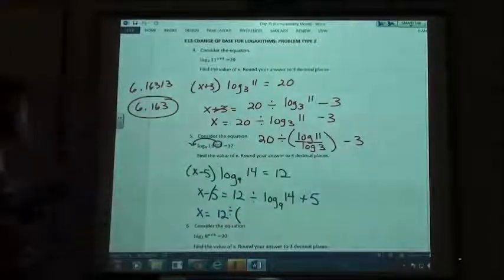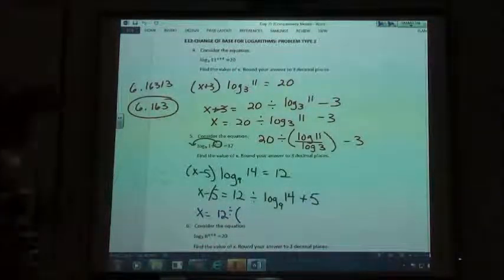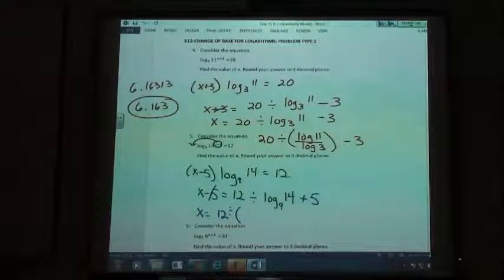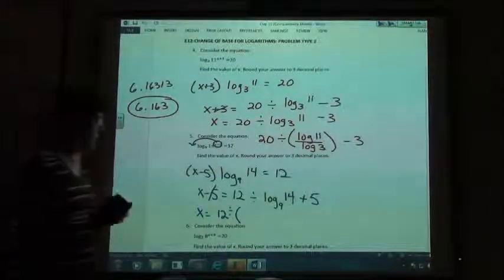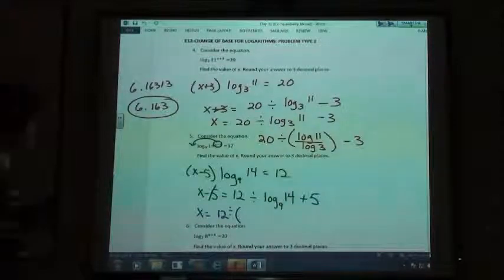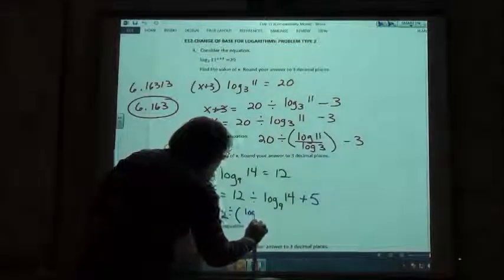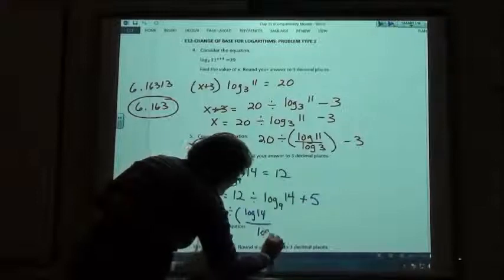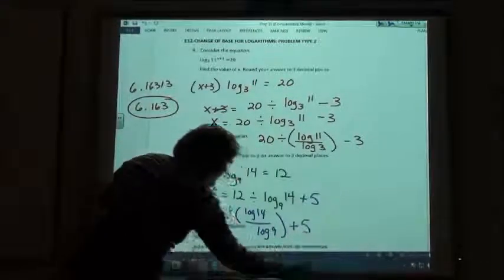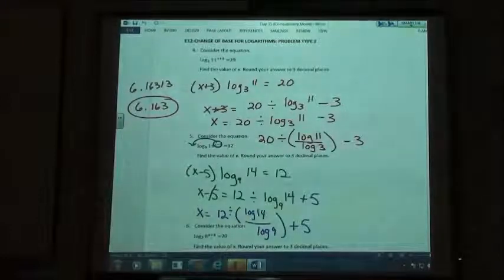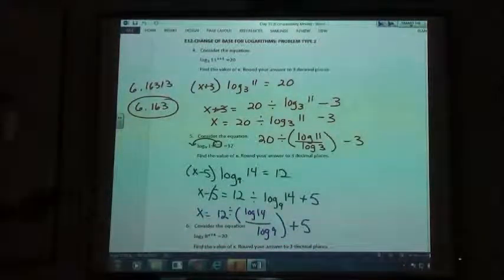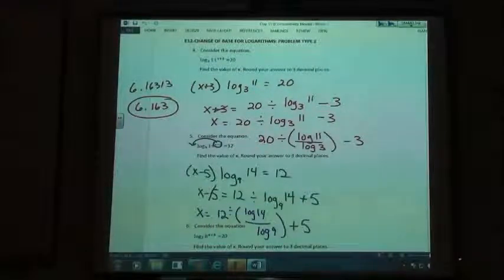So x is going to equal 12 divided by... And what are we going to do with the log base 9 of 14? Oh, that's going to be log 9 divided by... What one goes on top? Log 14. 14 divided by log 9. So 12 divided by the log of 14 over the log of 9 plus 5. So, punching that into our calculator.